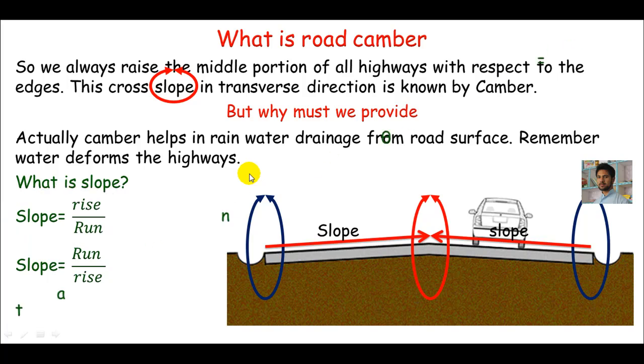We can say slope is also tangent of theta, which is perpendicular over base, or rise over run, because rise is always equal to perpendicular and base is taken as run. So rise over run, or tangent theta, is known as slope.